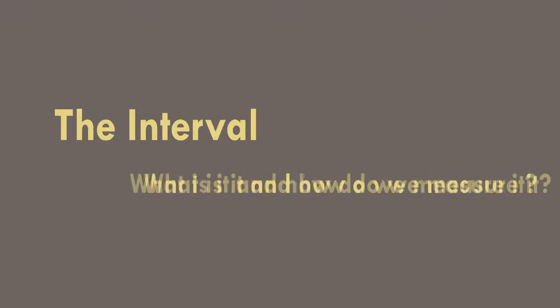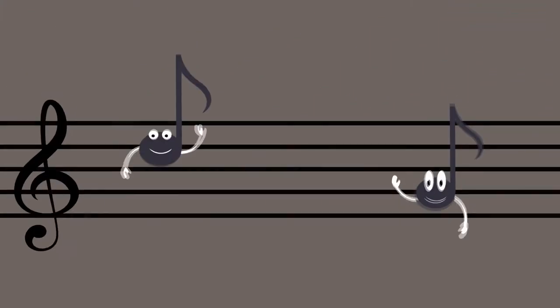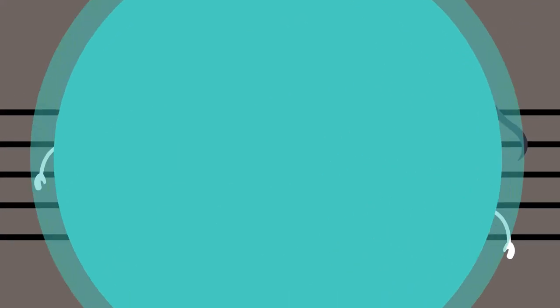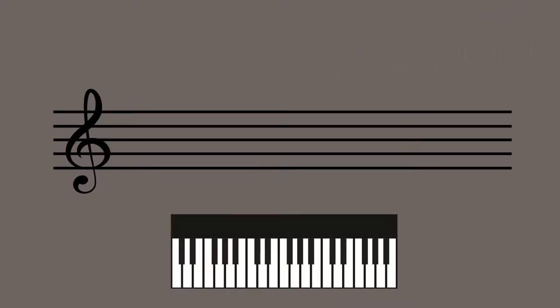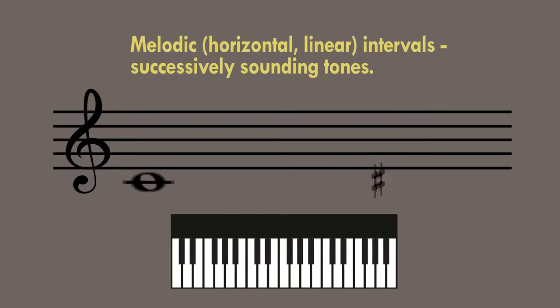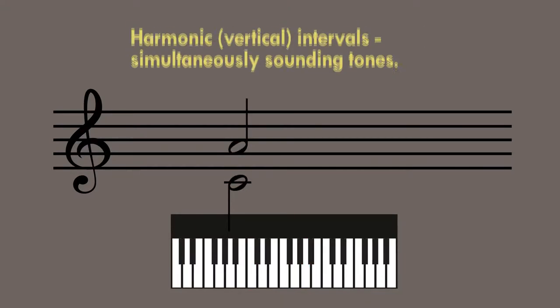The Interval — what is it and how do we measure it? The interval is the space between two pitches. If the two tones sound one after the other, we speak of a melodic interval. And if they sound together at the same time, we call that a harmonic interval.